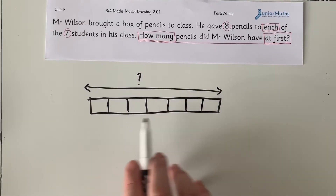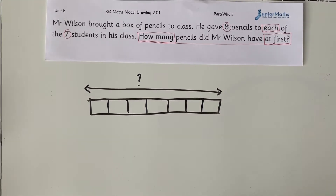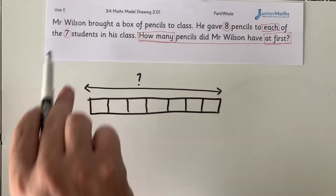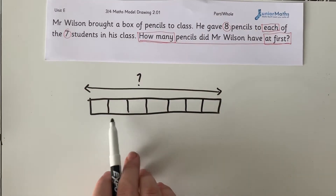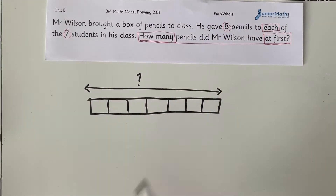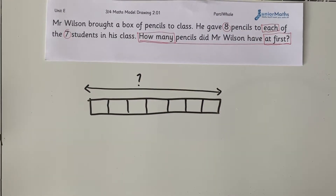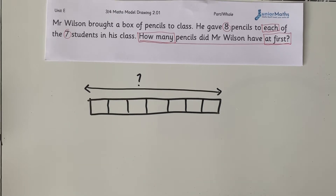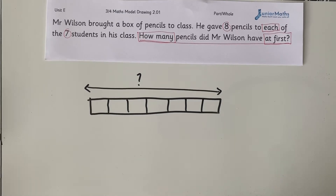One thing I like to do so students get the right number of lines — and they don't accidentally do eight — is: if there are seven equal parts, I need to draw six lines. If there are two equal parts, we draw one line to divide it up. So it's always take away one.